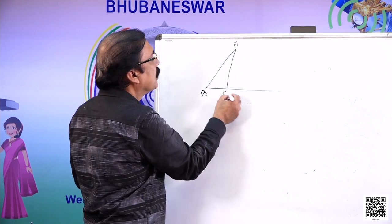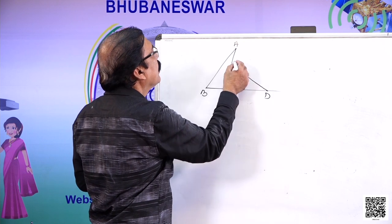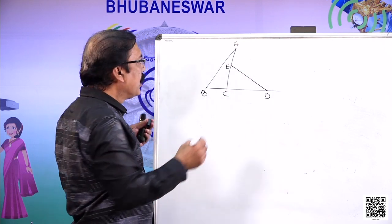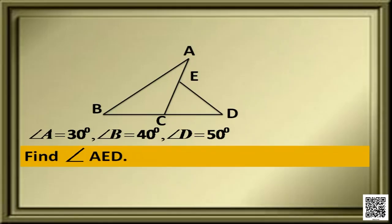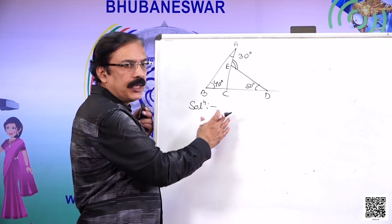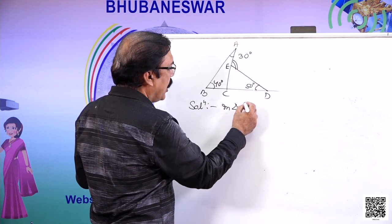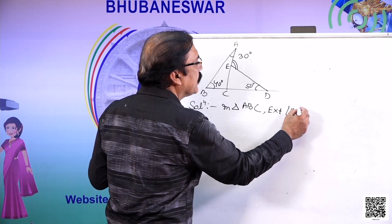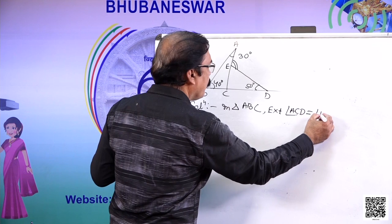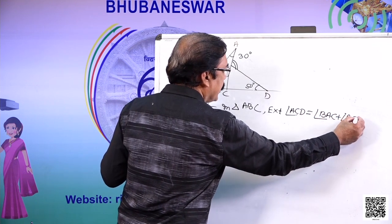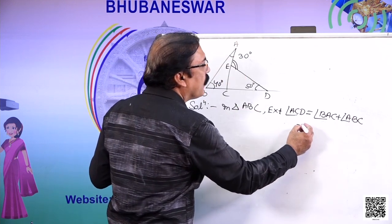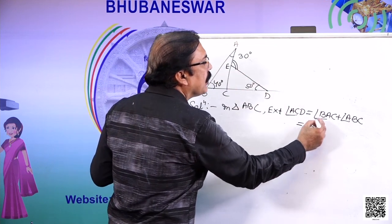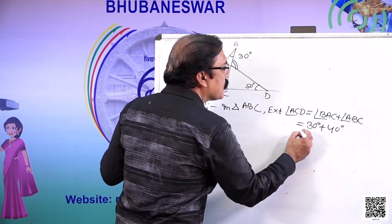In this figure, there is triangle ABC extended up to D, with point E on a line such that angle A is 30 degrees, angle B is 40 degrees, and angle D is 50 degrees. In triangle ABC, the exterior angle is ACD. Exterior angle ACD is equal to angle BAC plus angle ABC. The value of BAC is 30 degrees and ABC is 40 degrees, so this sum is 70 degrees.